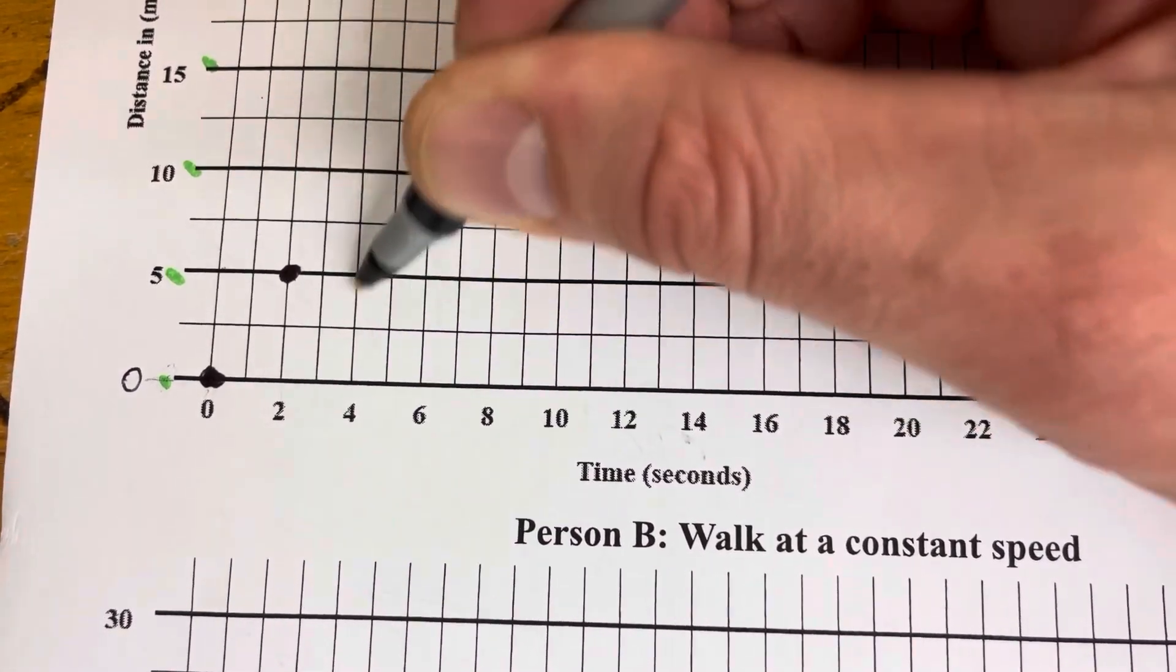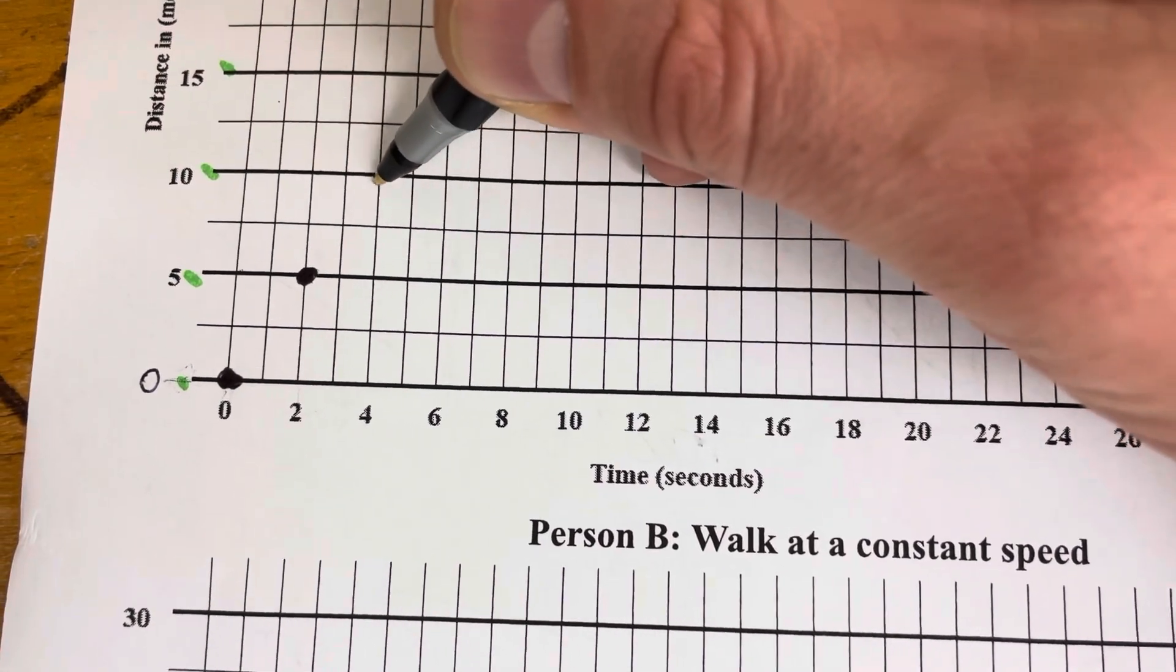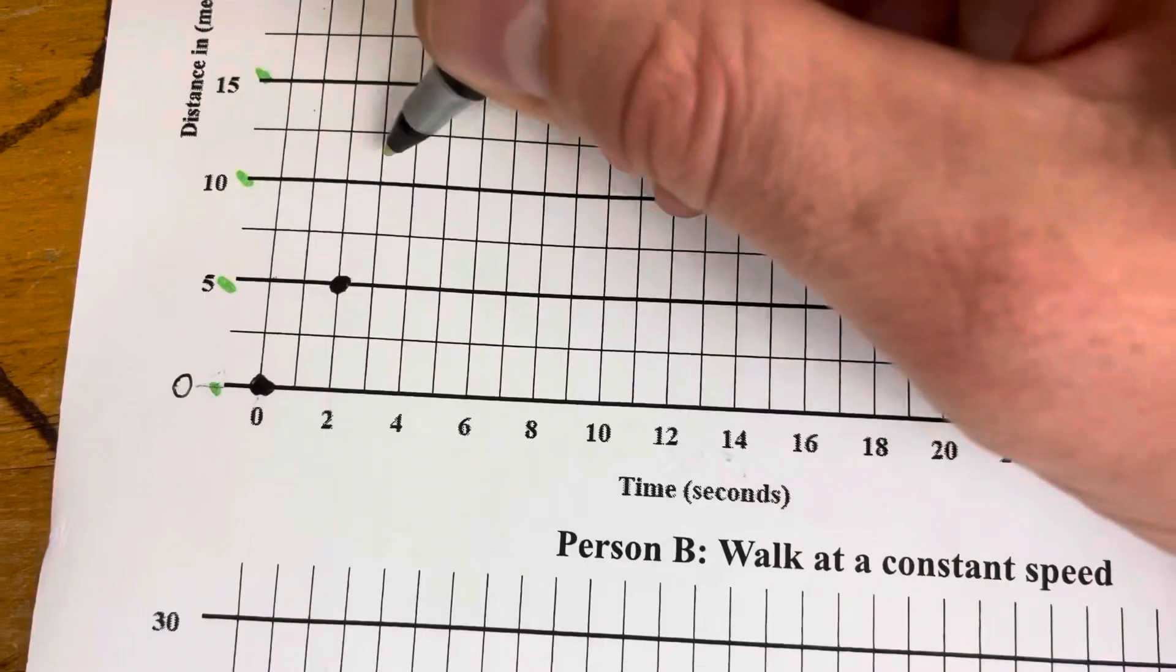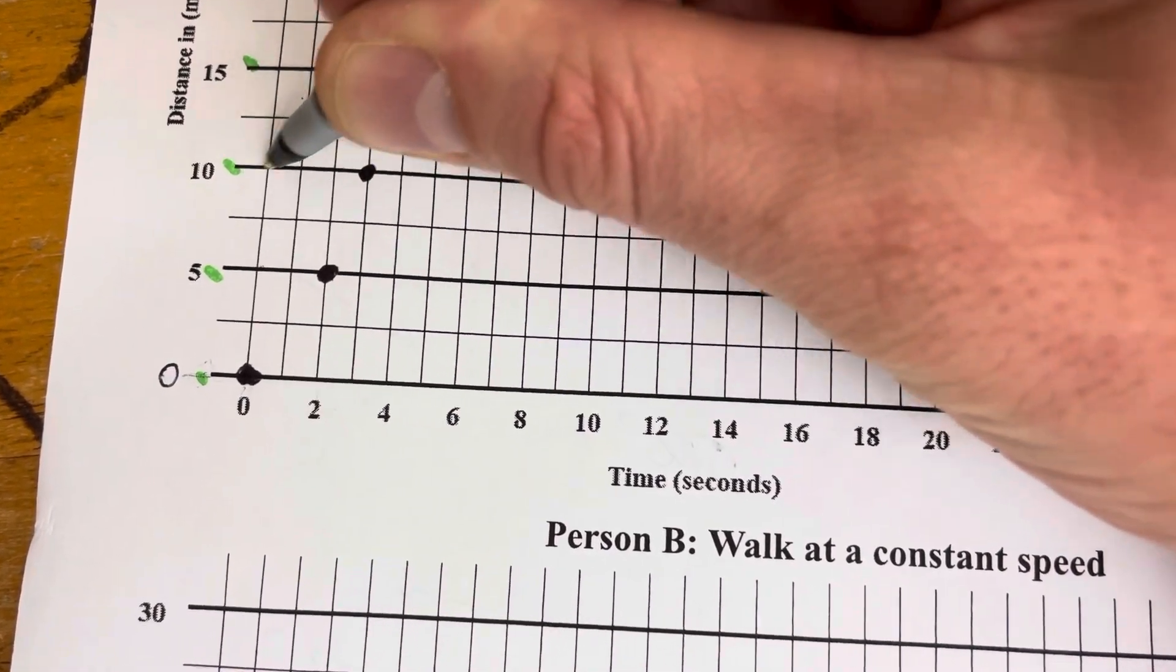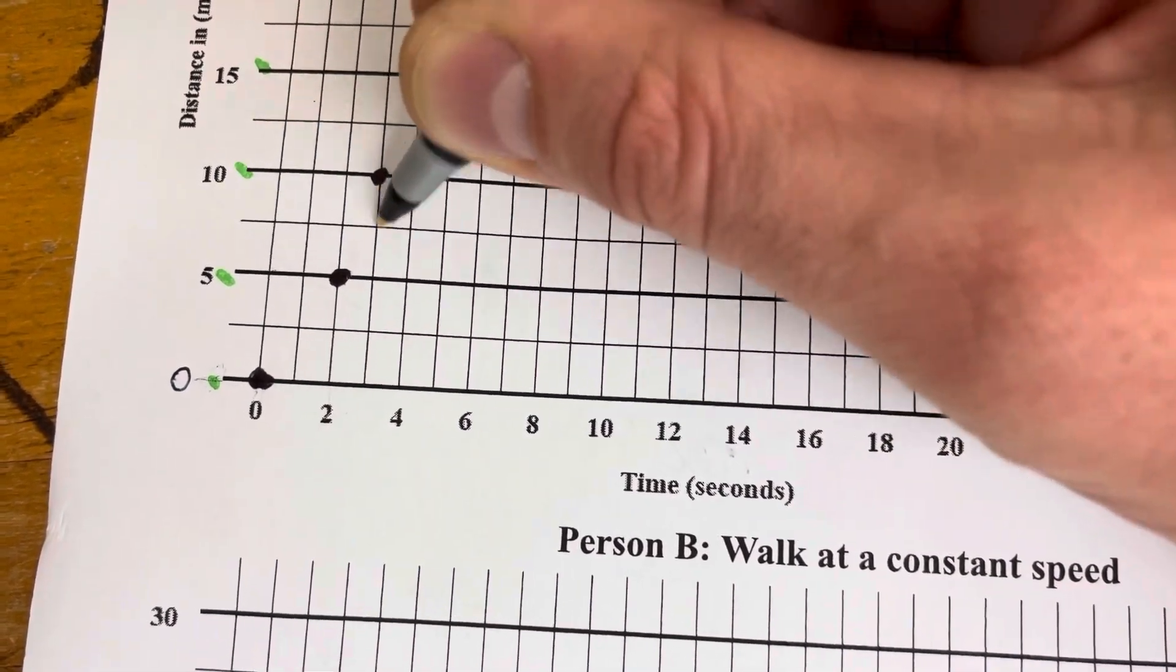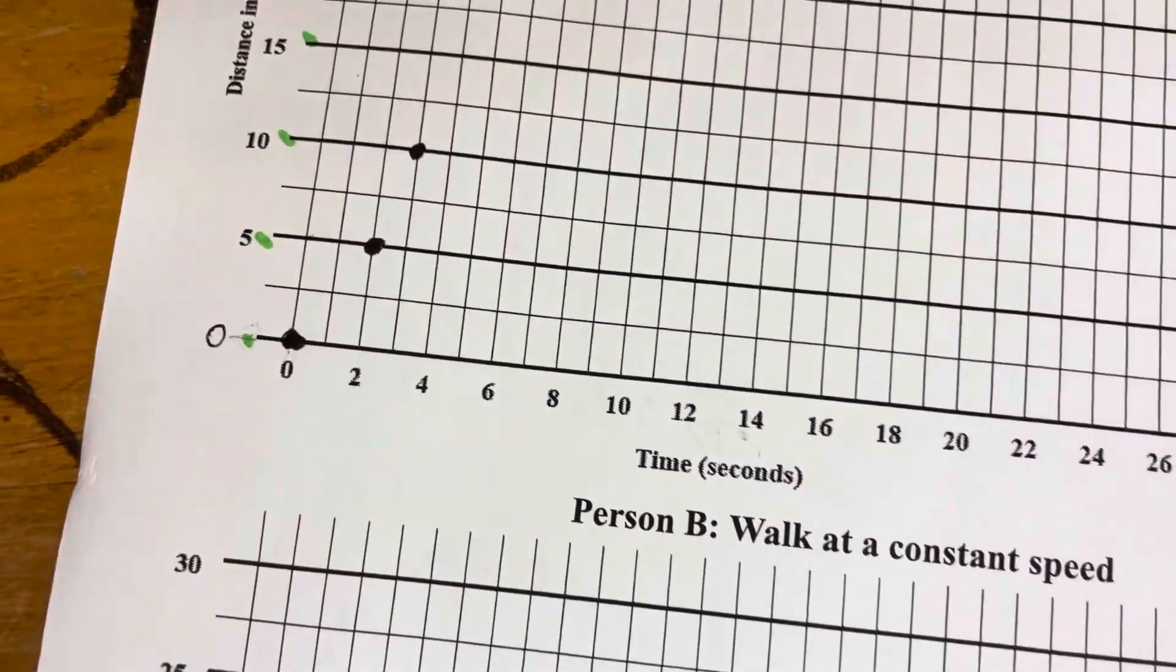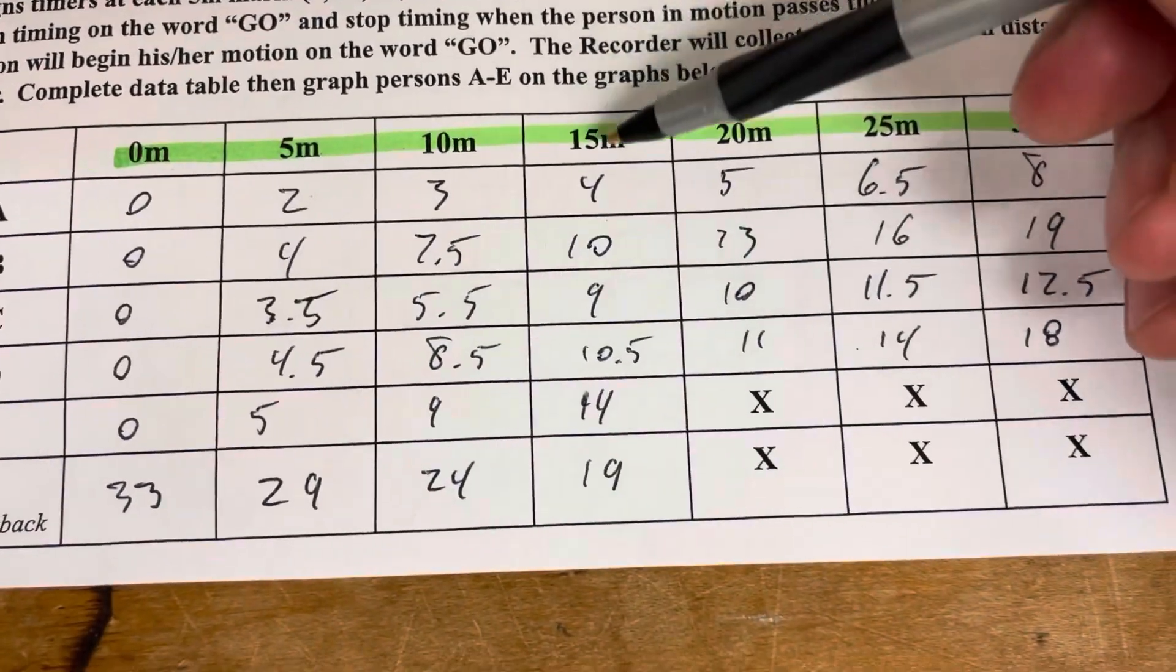Now again, your graph will not look exactly like mine. Do not use my exact numbers. This depends on what person was running and what class period it was. Use the data from your class period. Here you can see I've marked that 10 meter mark for 3 seconds.